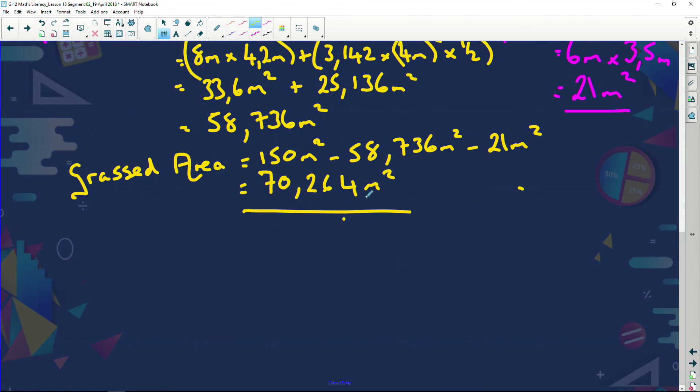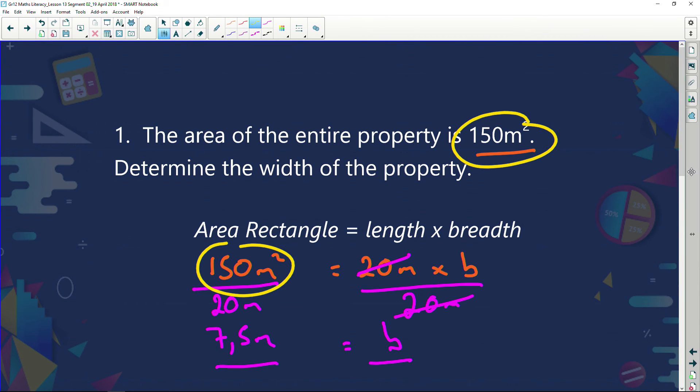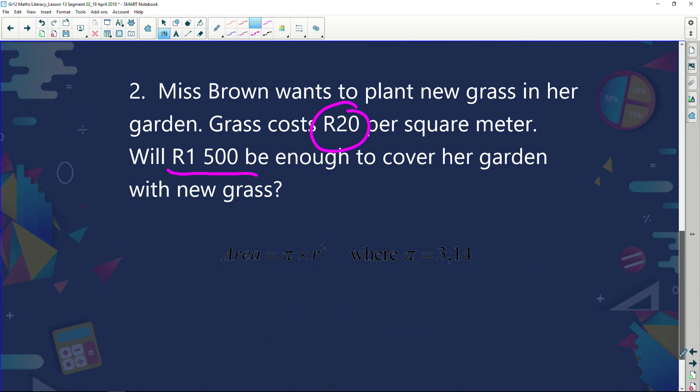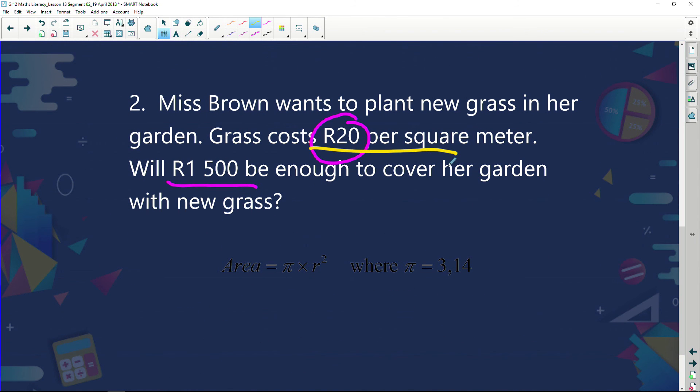So how many meters squared must Mrs. Brown buy? She's going to have to buy, now, 70.264. She's told that one meter squared of grass costs her 20 rand. Was it 20 rand? I'm sure it was 20 rand. Let's just have a look here quickly. Yeah, 20 rand per square meter.